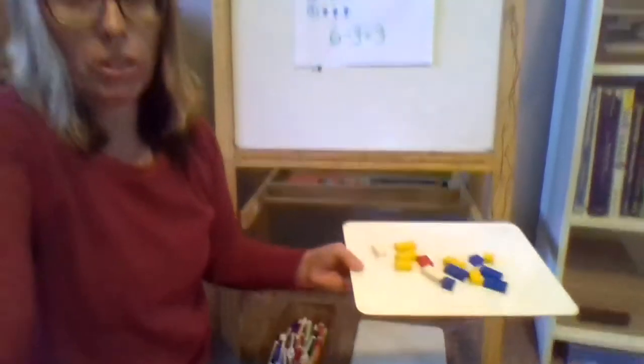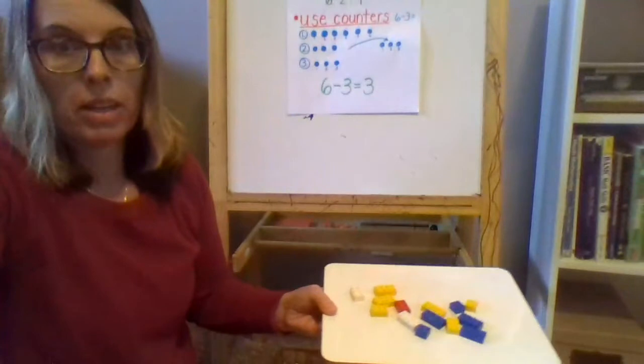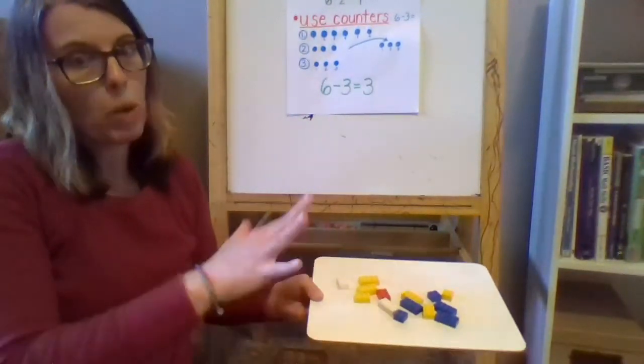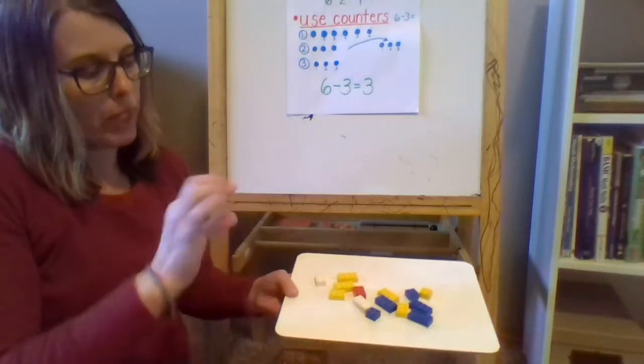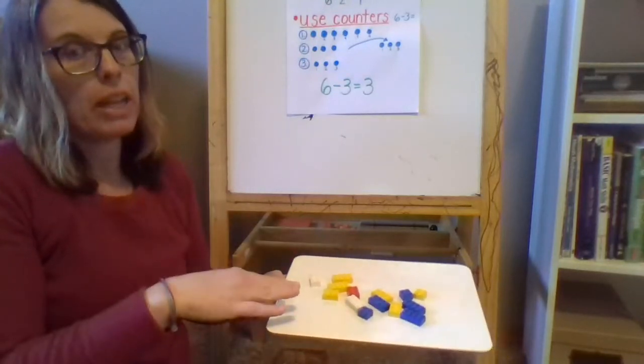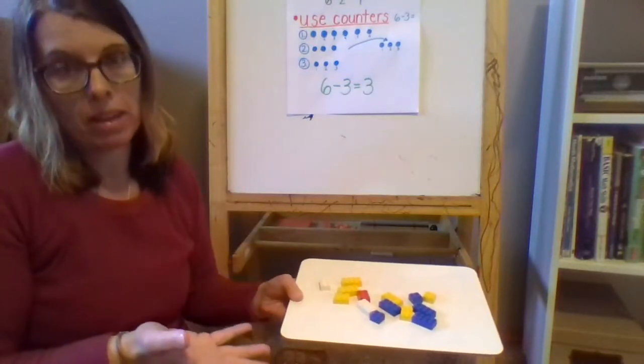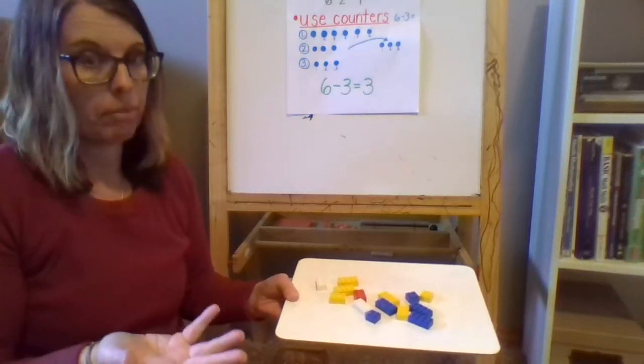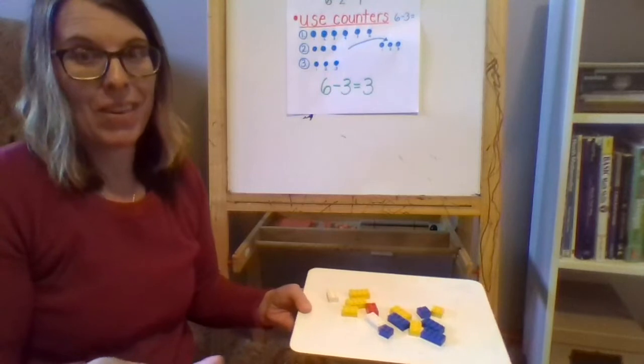So I want you, if you haven't already found something, to pause the screen and please go find about 20 small blocks, 20 Legos, 20 of something that you can use to be your counter for today. Okay? I think we're all set to go now.